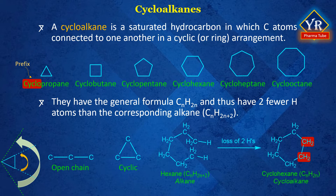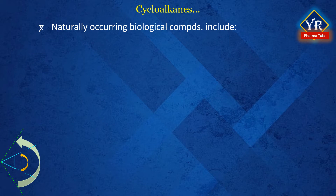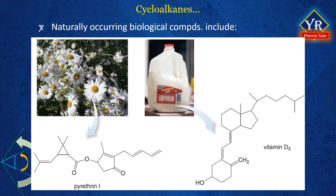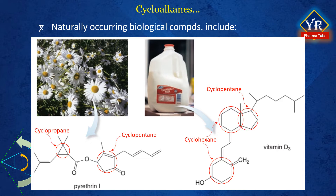Cyclic compounds such as cycloalkanes occur widely in nature and many have interesting and important biological properties. For example, pyrethrin-1, a naturally occurring insecticide obtained from chrysanthemums, consists of both a three and five-membered ring. Vitamin D3, a fat-soluble vitamin that regulates calcium and phosphorus metabolism, contains six and five-membered rings. Many foods, particularly milk, are fortified with vitamin D3 so that we get enough of this vital nutrient in our diet.